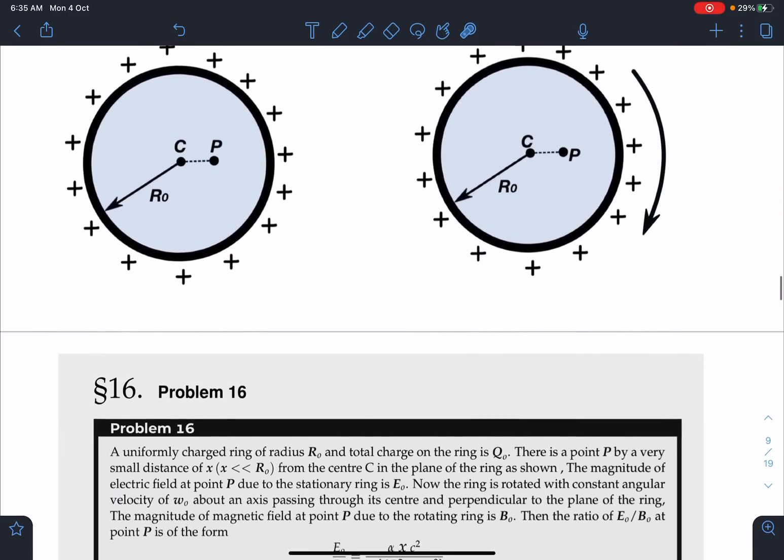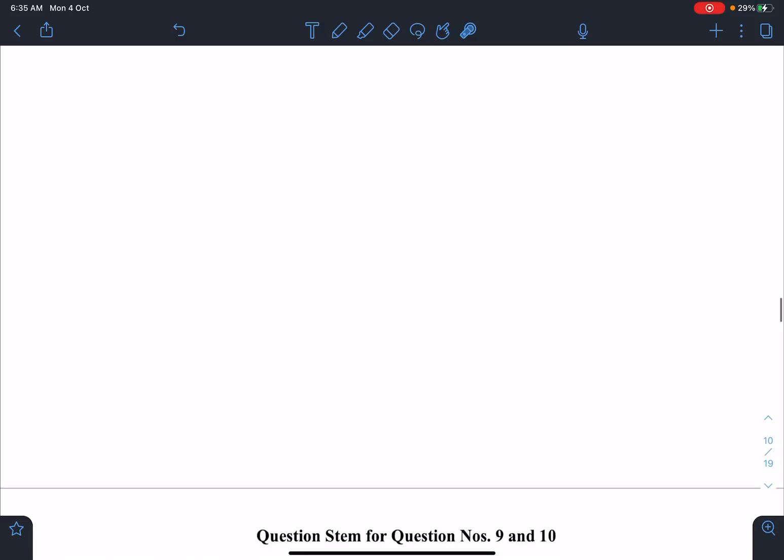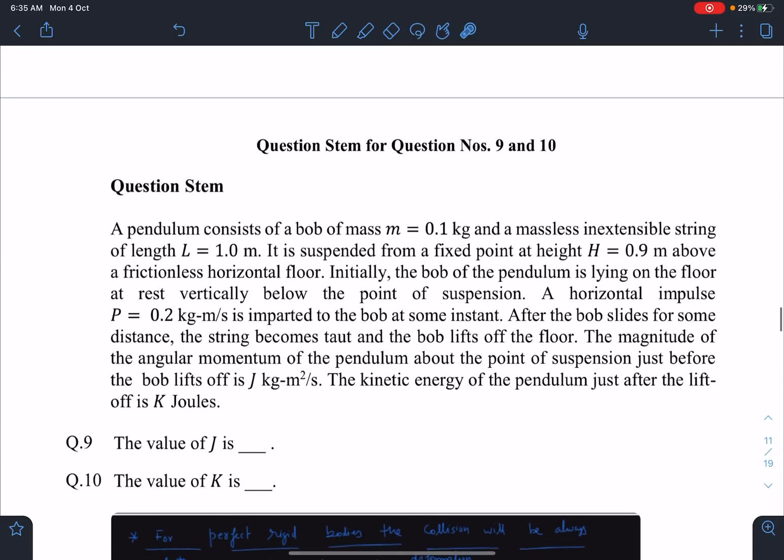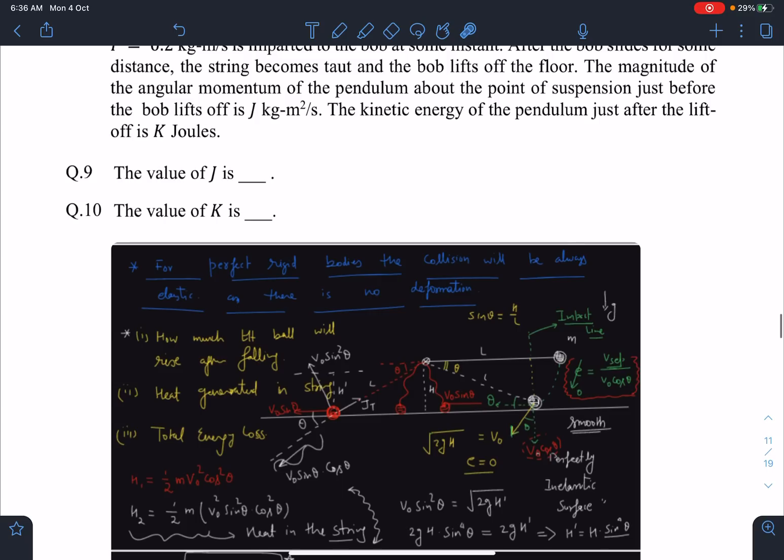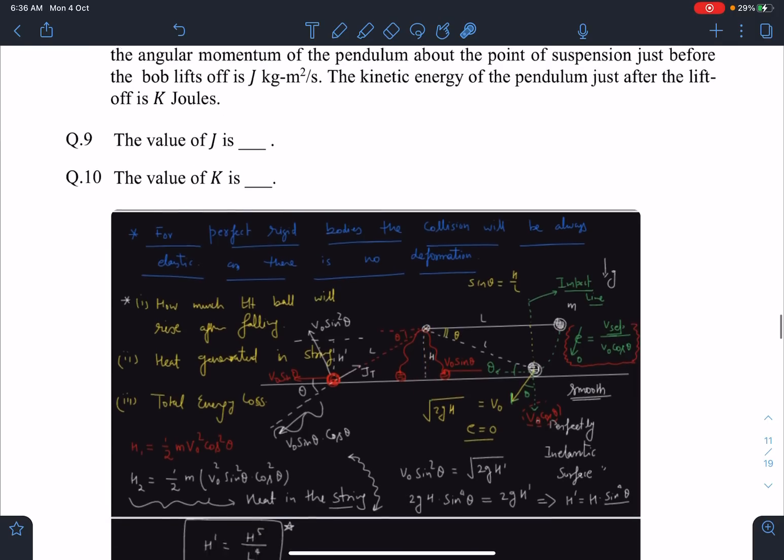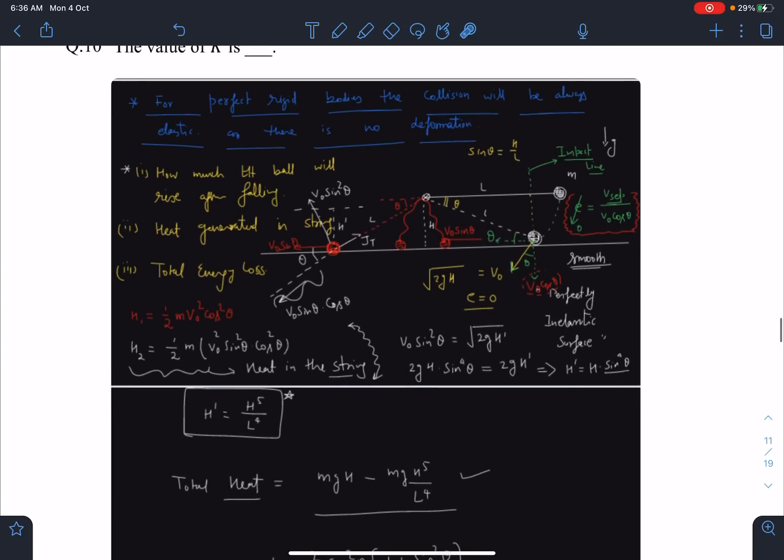The next one is a pendulum consisting of bob, and to my surprise a very similar problem we have discussed. But this JEE problem is pretty easy. Here I have dropped this bob from some height h. JEE is starting its problem from this point.